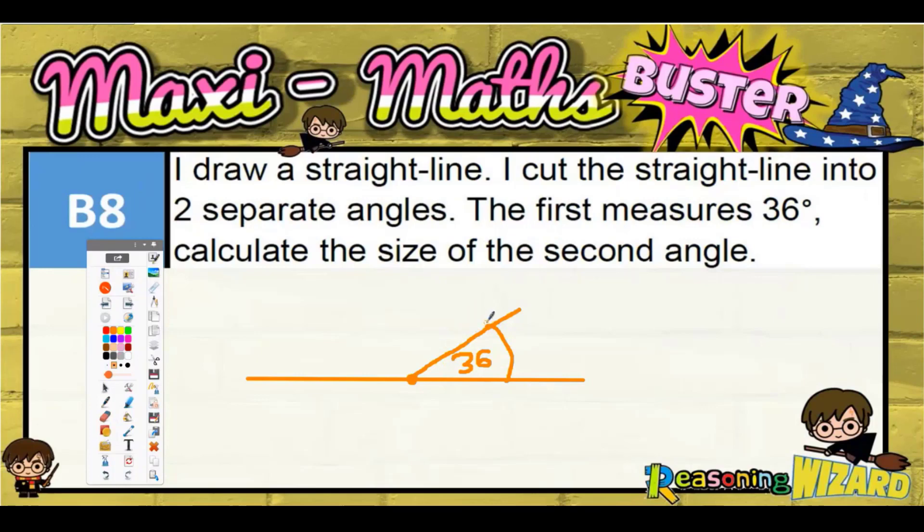It says calculate the size of the second angle, so it's basically asking me what this big angle is here. Now these two angles together basically make a semicircle. You can see I've actually drawn that semicircle over the top there. Now a full circle is 360°, so a semicircle is going to be half of 360.